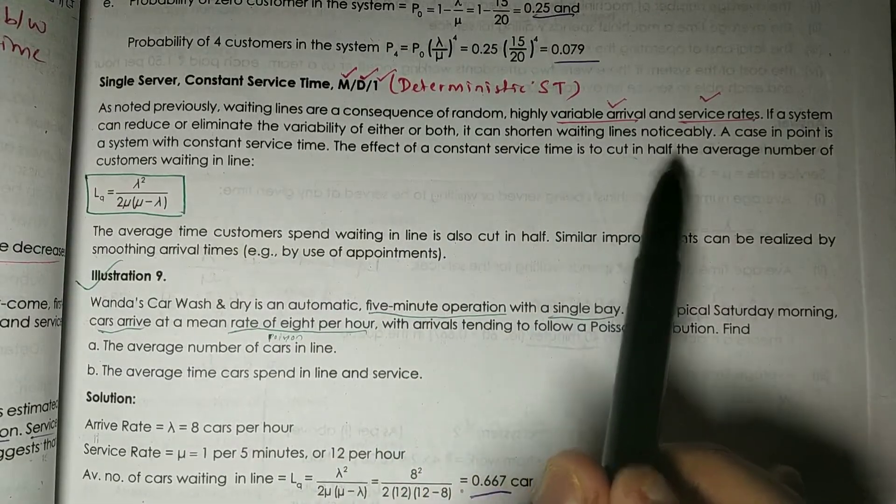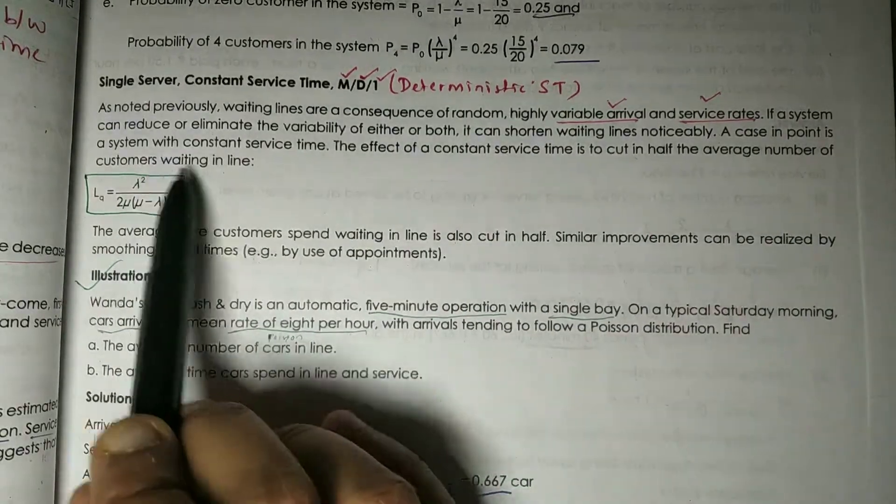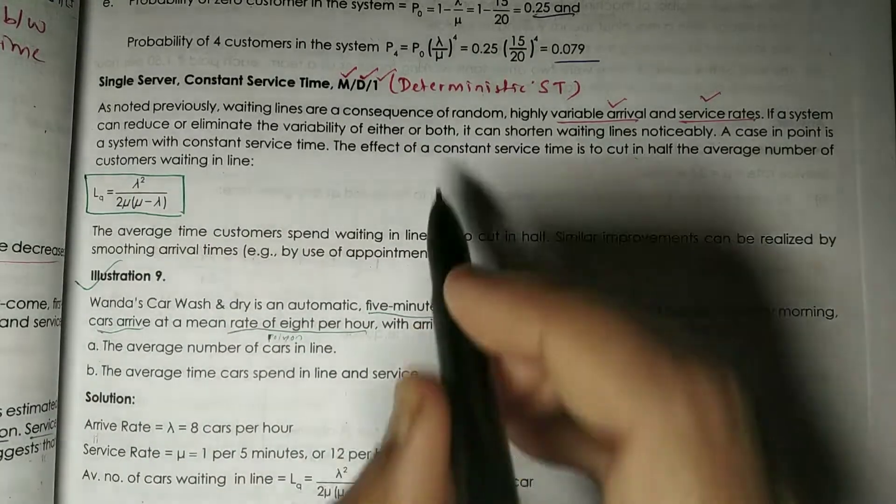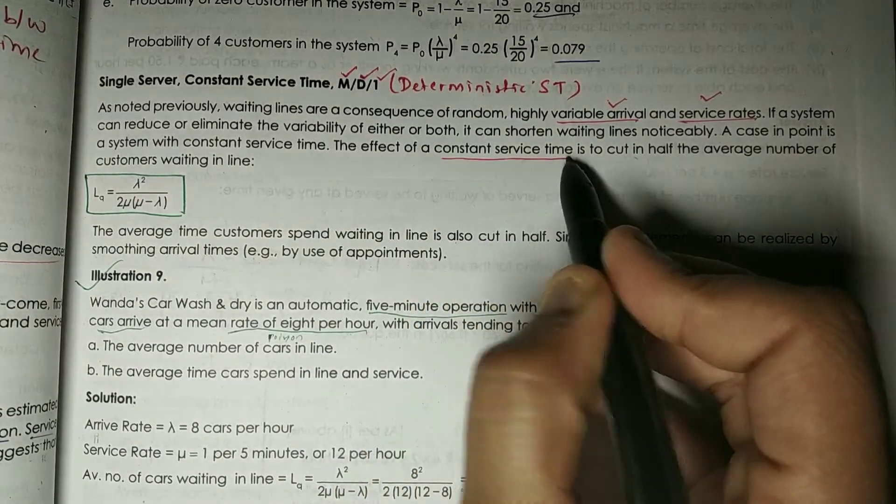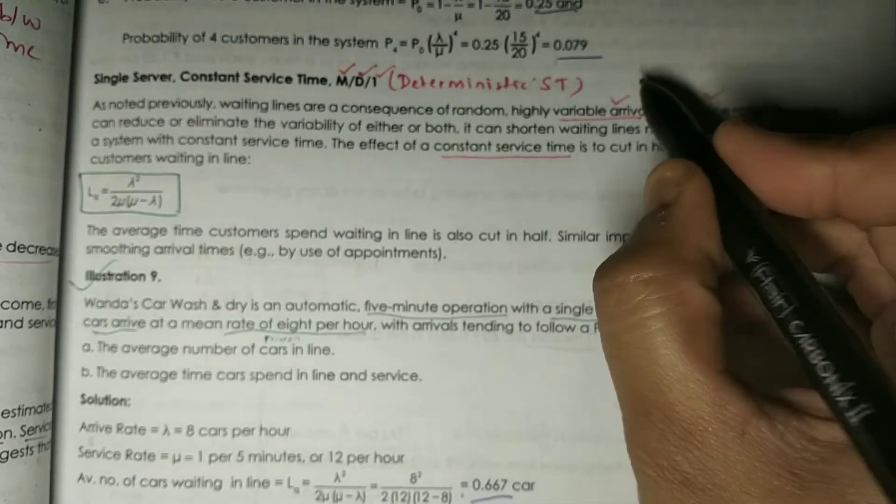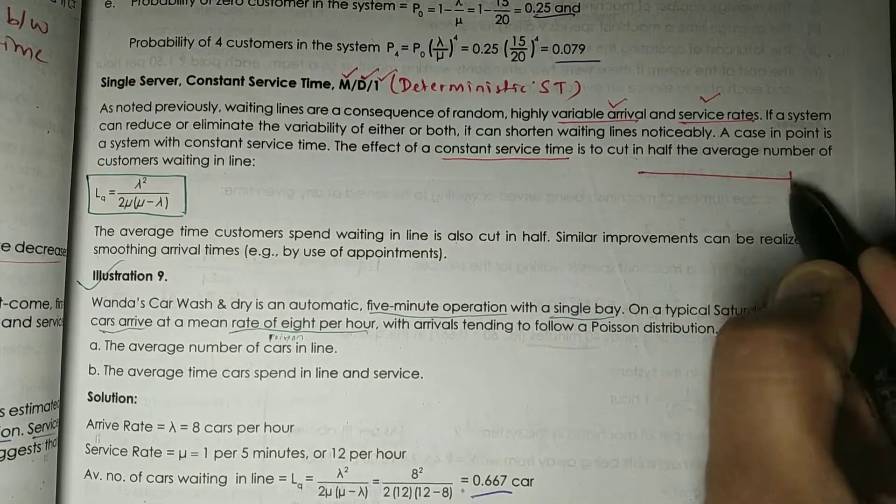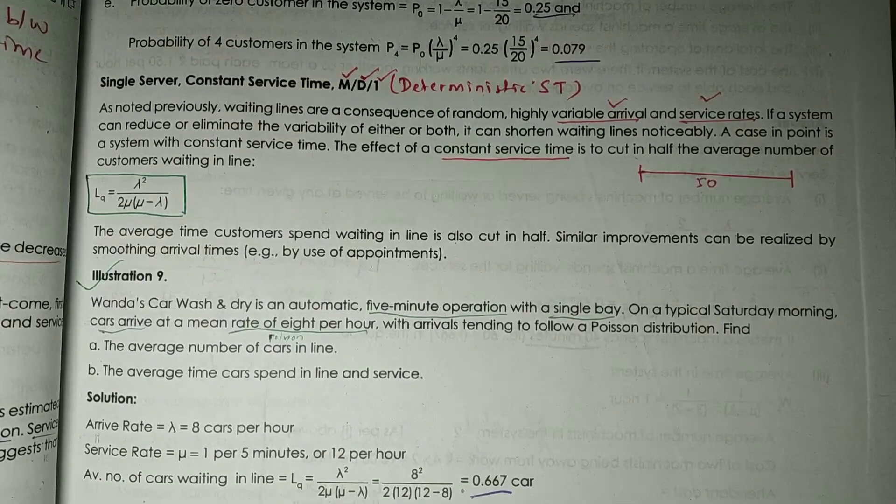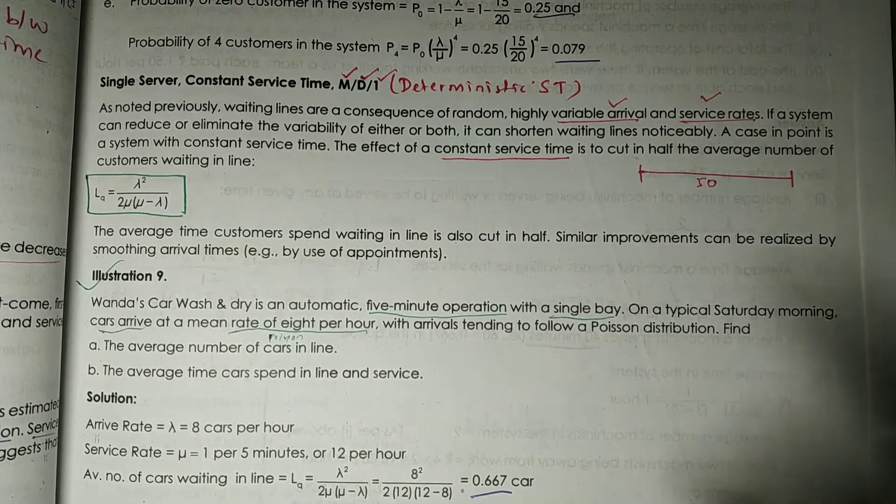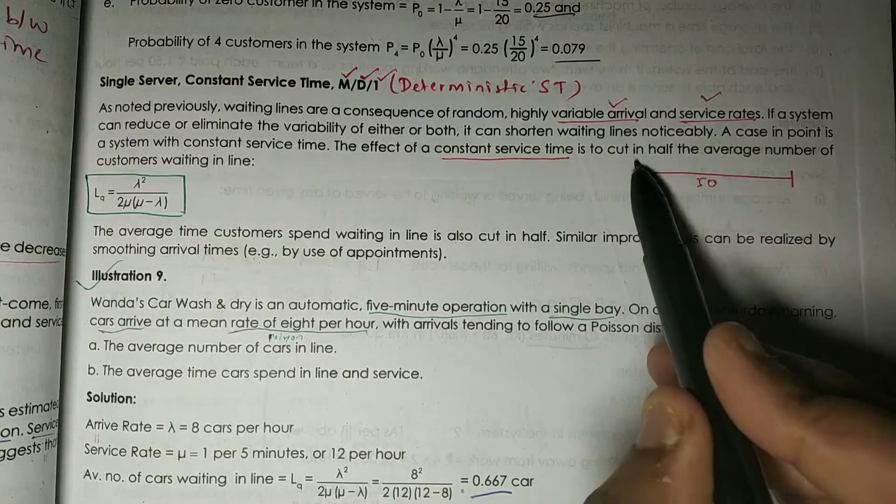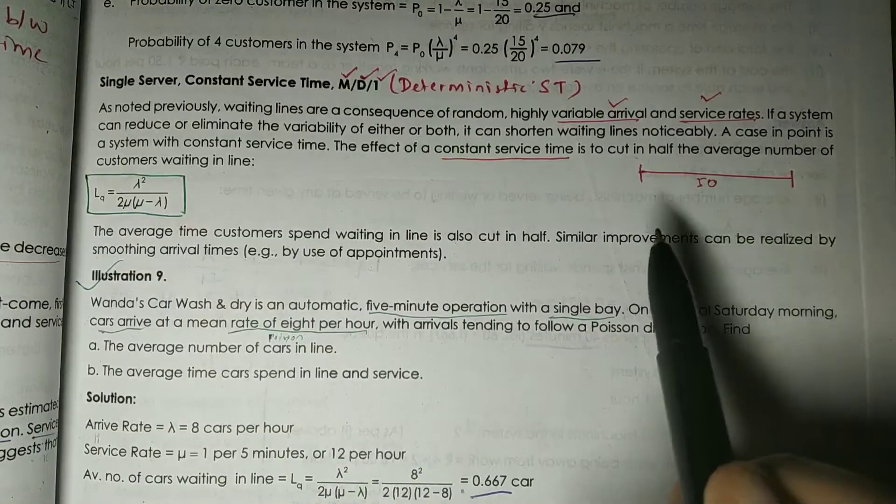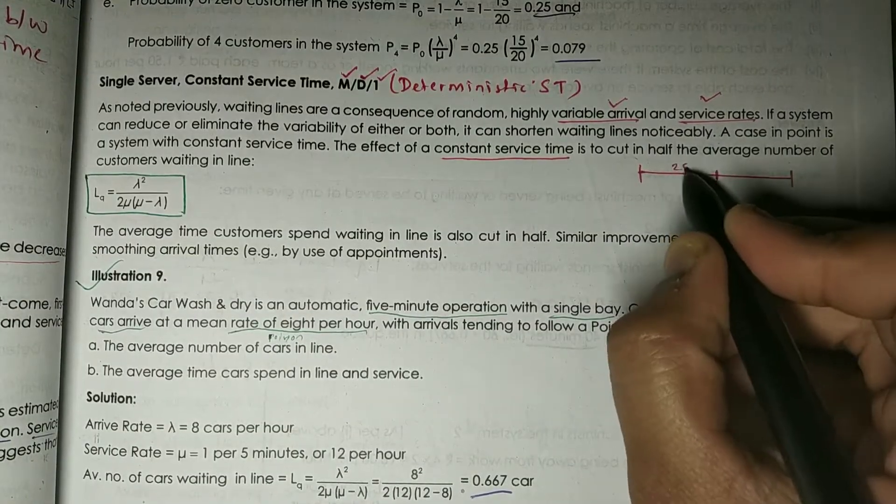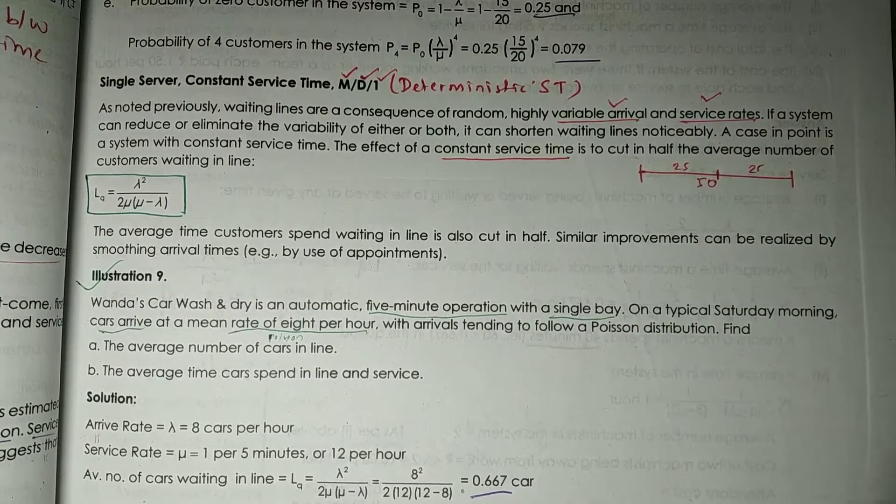A case in point is a system with constant service time. The effect of a constant service time is to cut in half the average number of customers waiting in line. So constant service time ka kya fayda hota hai—if there are 50 customers standing or waiting, it cuts them in half, making them 25-25.